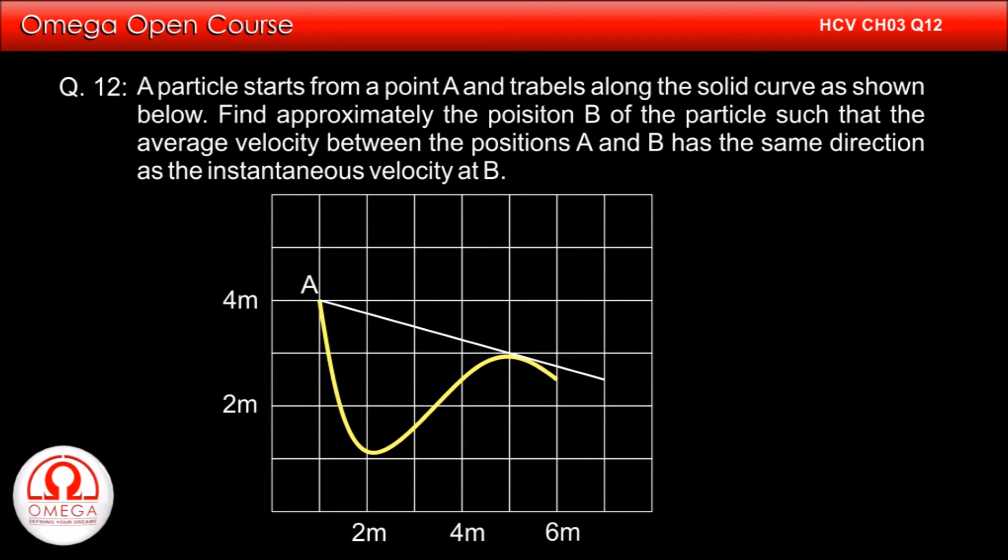So, if we draw a line from A such that it is tangent to the curve, then the point of contact of the line with the curve is B.